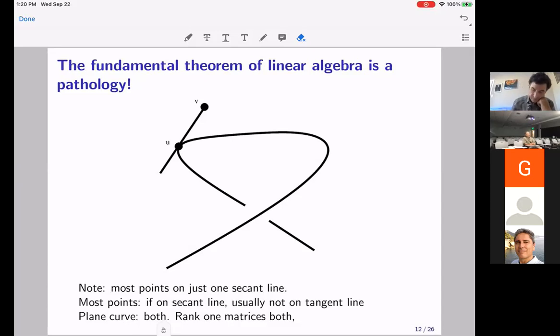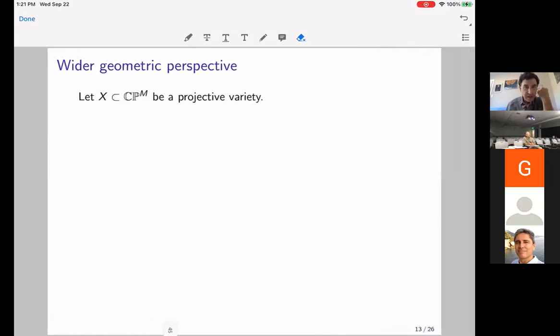And for most geometric objects sitting inside a space, a very large dimension, if you're on a secant line, you're not going to be on a tangent line. But for rank one matrices, this is true. Anytime you're on a tangent line to the space of rank one matrices, you are also on a secant line to the space of rank one matrices. And it's this pathology that drives the fundamental theorem of linear algebra that makes all these things happen for linear maps that fail for tensors. But they don't just fail for higher order tensors. They fail for most geometric objects. So the takeaway geometric point from this lecture